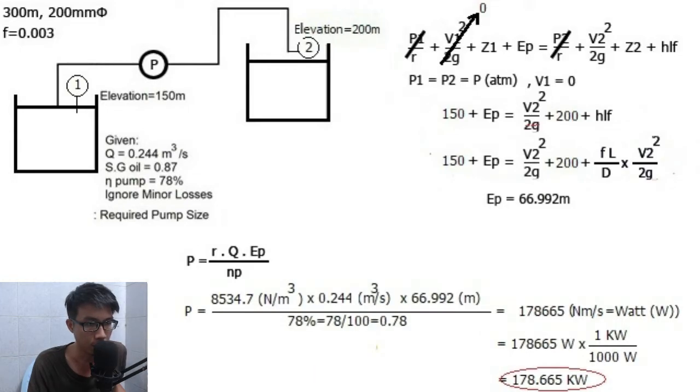Now we substitute the data in the power pump equation and we get 178.65 kilowatts for power of the pump. Power of the pump is also the same as the pump size. In this calculation, I converted 178.65 kilowatts. One kilowatt is equal to 1000 watts. Now we finish the pump sizing calculation.